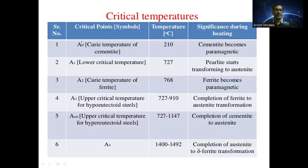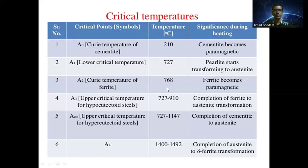Critical point A0 is called the Curie temperature of cementite at 210 degrees Celsius; cementite becomes paramagnetic. A1 is the lower critical temperature at 727 degrees Celsius; during heating, pearlite starts transforming to austenite. A2 is the Curie temperature of ferrite at 768 degrees Celsius; ferrite becomes paramagnetic.